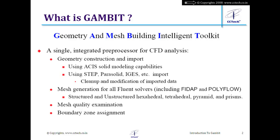Once the geometry is imported, due to data loss during import we may need to repair the geometry. Once we have a watertight volume the geometry is ready for meshing. We can create structured or unstructured mesh using GAMBIT. Don't confuse structured mesh in GAMBIT with ICEM-CFD — they have a different philosophy. In ICEM-CFD, multi-block structured meshing uses blocking, whereas in GAMBIT structured mesh is achieved using schemes like map or submap.